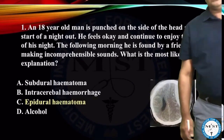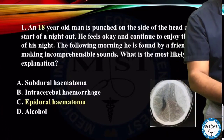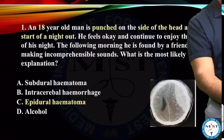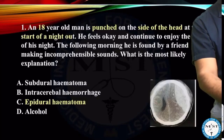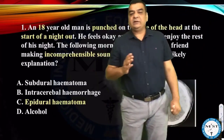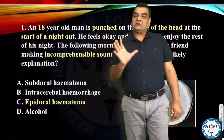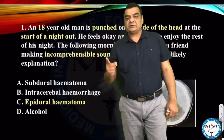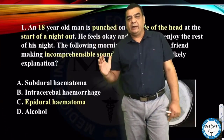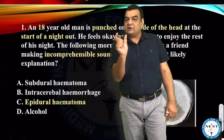Let me quickly take a look so that I am not missing out on anything. This is an 18-year-old who was punched on the side of the head at the start of a night out. He feels okay and continued to enjoy the rest of his night. The following morning he is found by a friend making incomprehensible sounds. The story is quite clear-cut — this patient had some injury a few hours before he developed deterioration in consciousness level. After the blow the patient was absolutely fine, but next morning his GCS started going down. So probably this is a case of lucid interval.